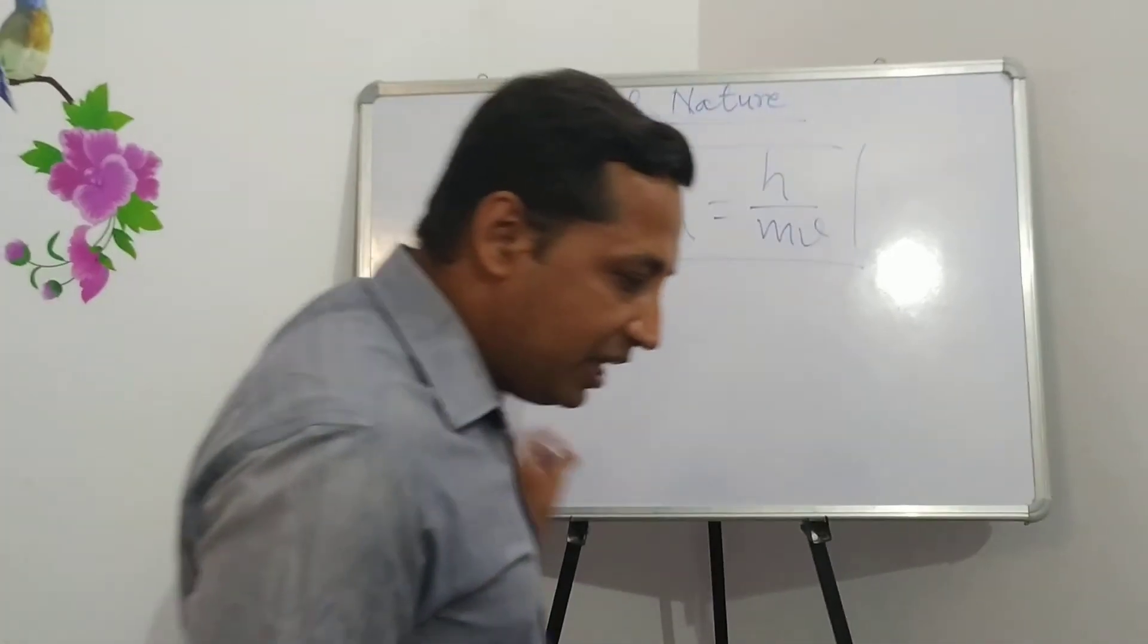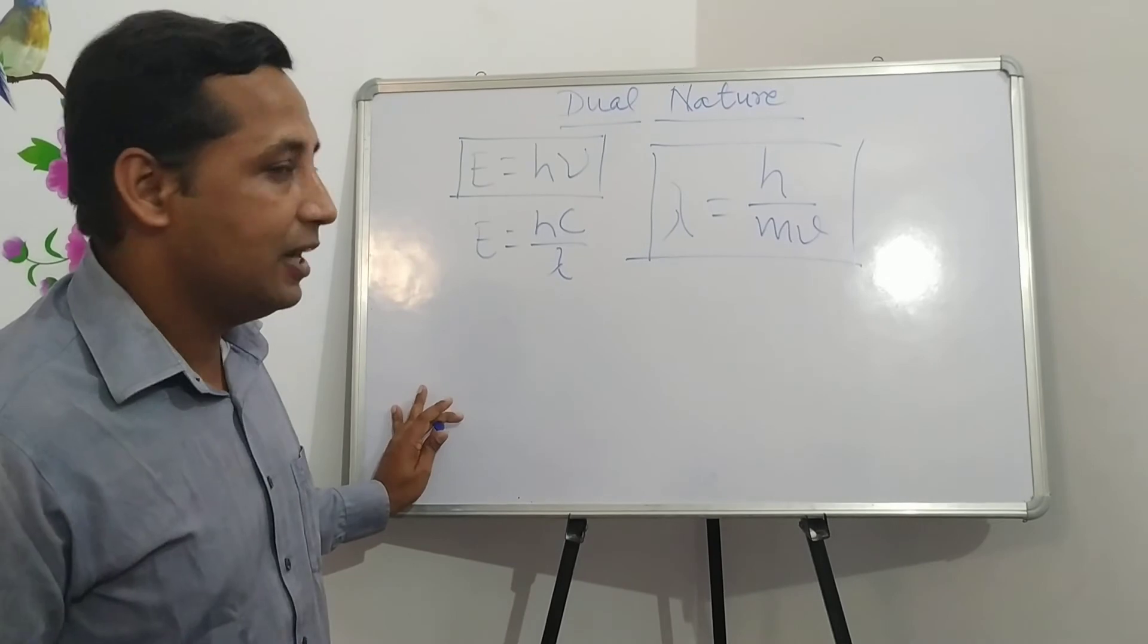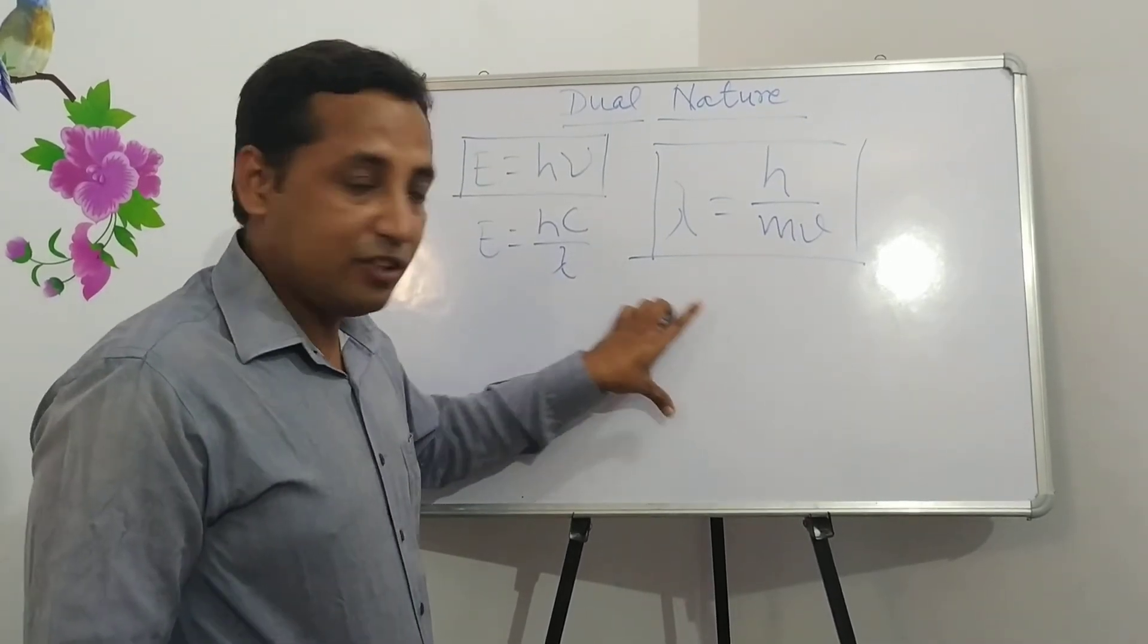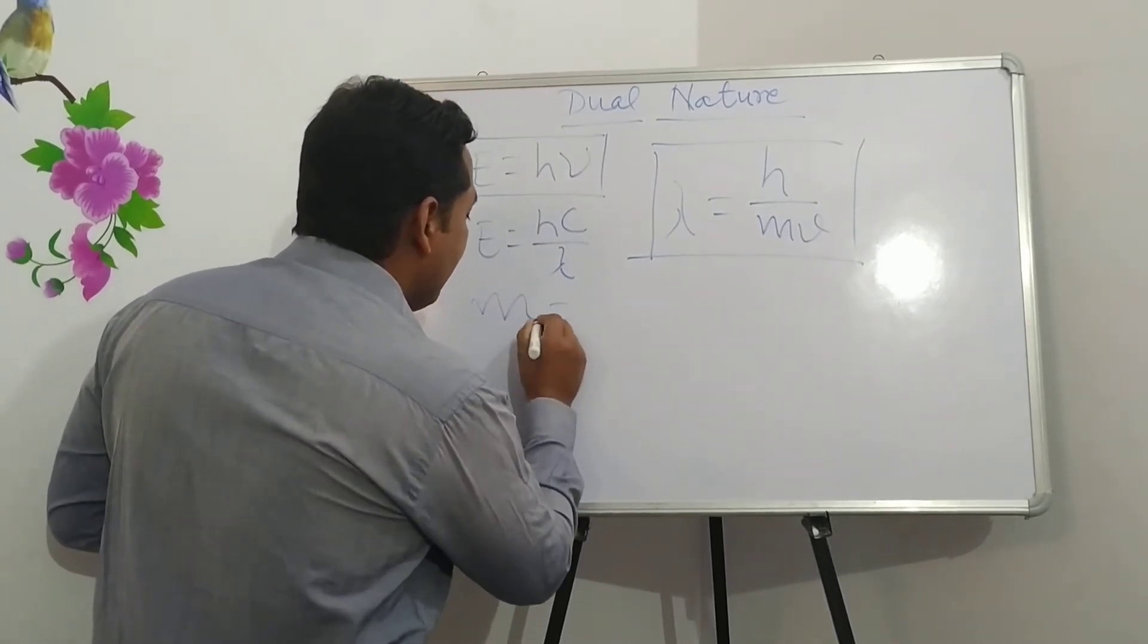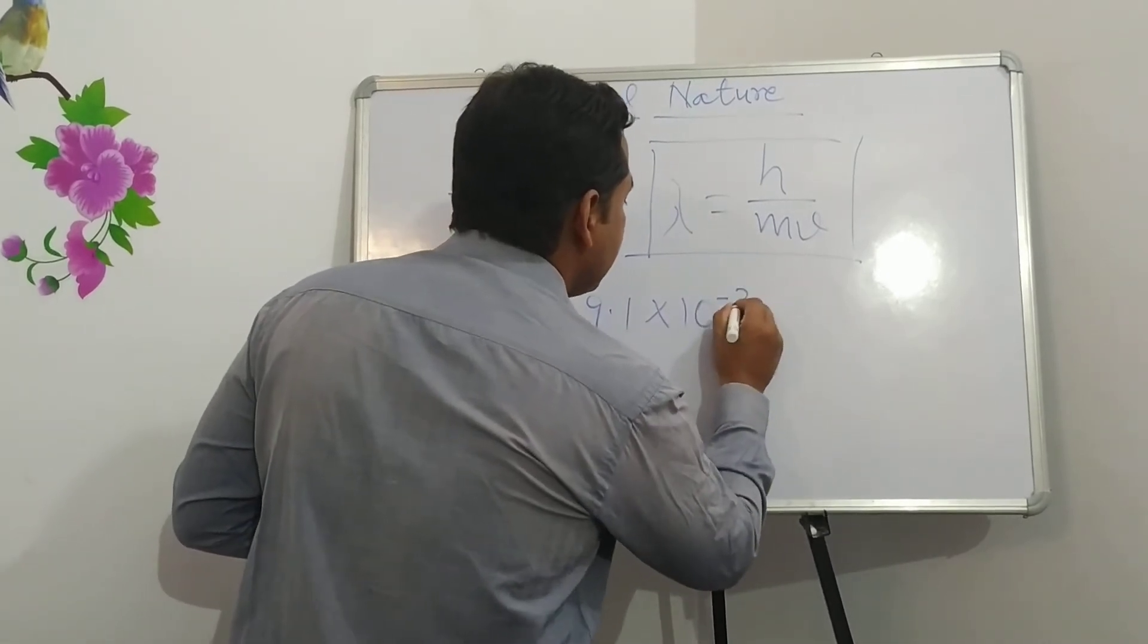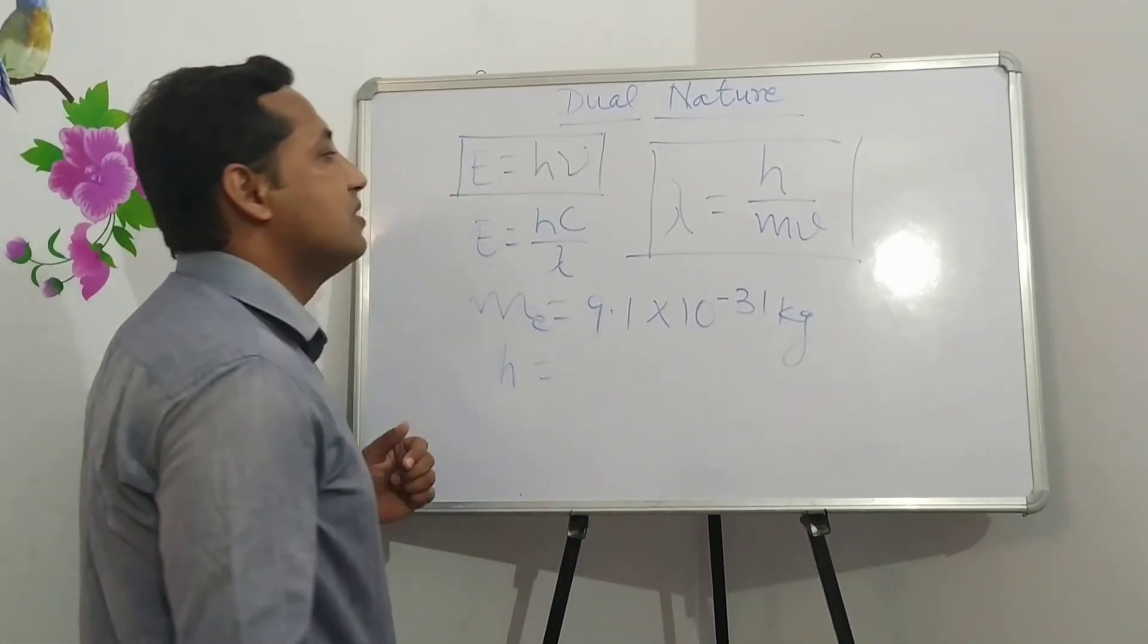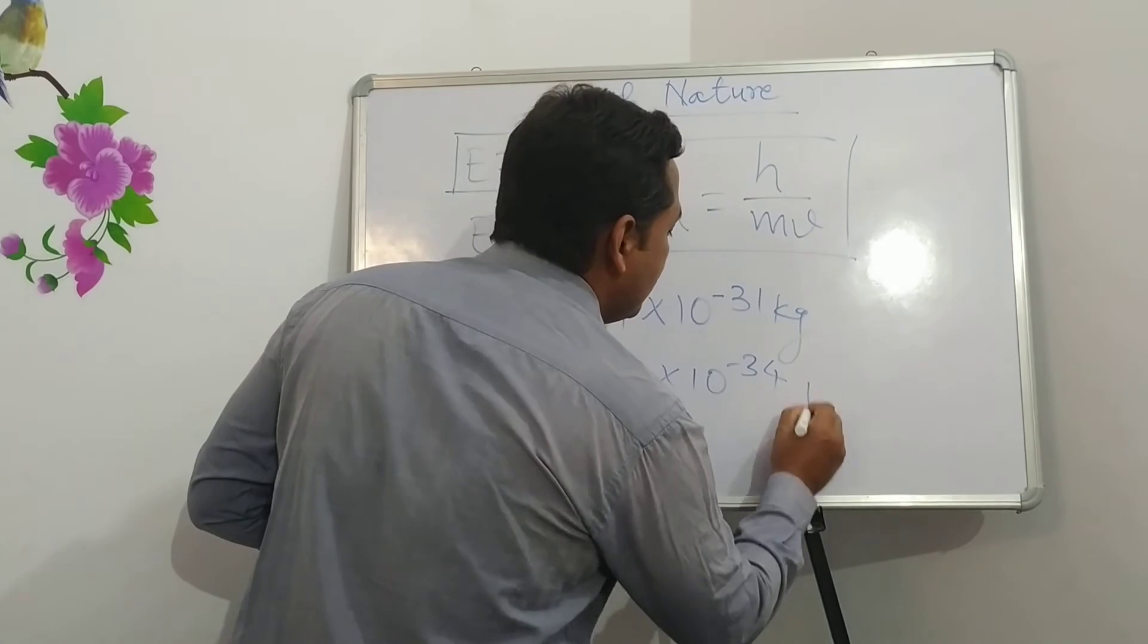We have some numericals on the basis of this formula. In case of electrons, mass of electron is equal to 9.1 into 10 to the power minus 31 kg. As we know, value of Planck's constant H is equal to 6.62 into 10 to the power minus 34 joule seconds.